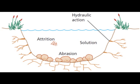Vertical erosion wears the riverbed downwards, deepening the valley. Lateral erosion wears the riverbed outwards, laterally, thus widening the valley.